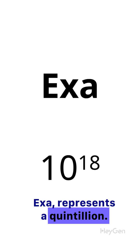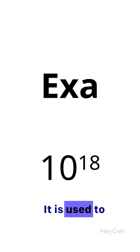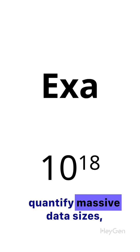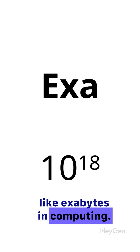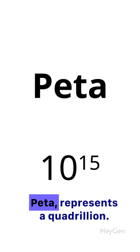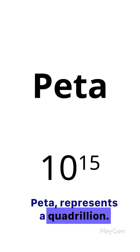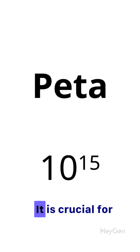Exa represents a quintillion. It is used to quantify massive data sizes, like exabytes in computing. Peta represents a quadrillion. It is crucial for big data analytics and cloud computing.